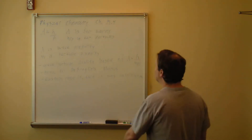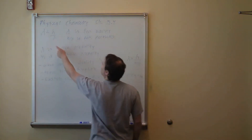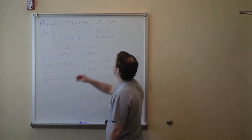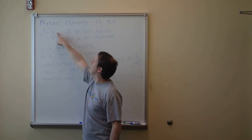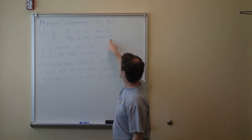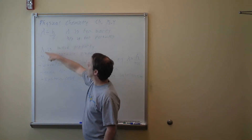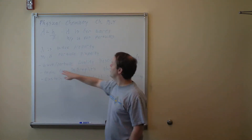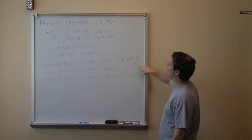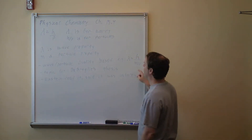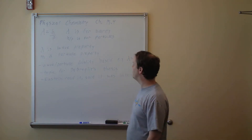Continuing on Physical Chemistry, Chapter 18, Section 4. Lambda is a wave property, while h/mv has momentum — a particle property. This gets into wave-particle duality, based on λ = h/mv. This was de Broglie's PhD thesis topic. Einstein read it and said it was an interesting idea.